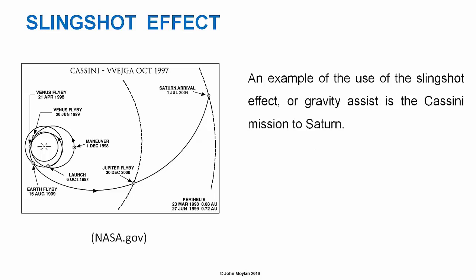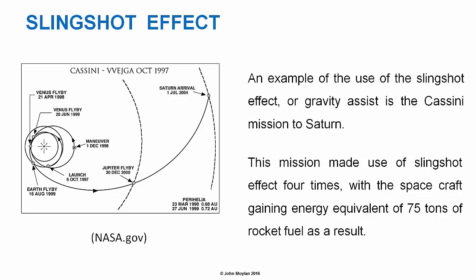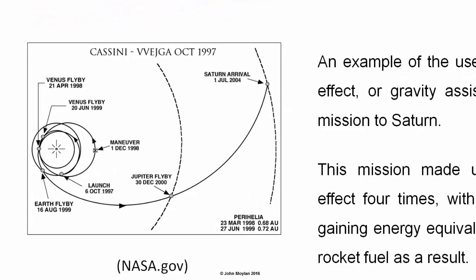An example of the use of the slingshot effect, or gravity assist as it is otherwise known, is the Cassini mission to Saturn. This mission made use of the slingshot effect four times, with the spacecraft gaining an energy equivalent of 75 tons of rocket fuel as a result.